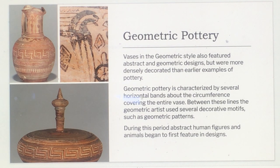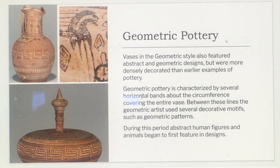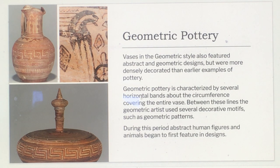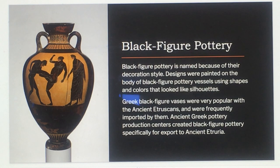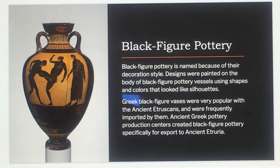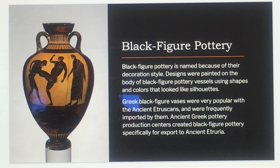Vases in the Geometric style also featured abstract and geometric designs but were more densely decorated than earlier examples. Geometric pottery is characterized by several horizontal bands covering the entire vase, with geometric decorative motifs between the lines. During this period, abstract human figures and animals began to feature in designs. Black figure pottery is named for its decoration style — designs were painted as silhouettes on the vessel. Greek black figure vases were very popular with the ancient Etruscans and were frequently imported and specifically produced for export to ancient Etruria.